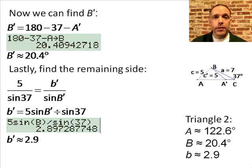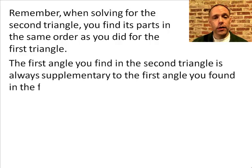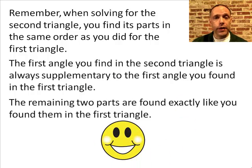So we now have the measures of the missing parts for the second triangle. In the ambiguous case for the law of sines, the first triangle always solves like a regular law of sines problem. In the second triangle, you find its parts in the same order as the first. The first angle you found in the first triangle is always supplementary to that first angle in the second triangle, and the other two parts are found exactly like you did in the first triangle. I hope this video helps you get through the ambiguous case of the law of sines. Remember, keep at it — it will eventually click. And keep on smiling.